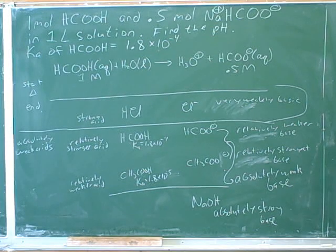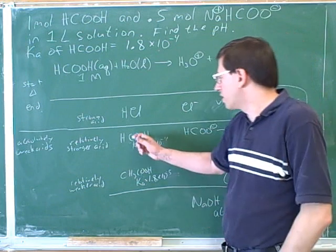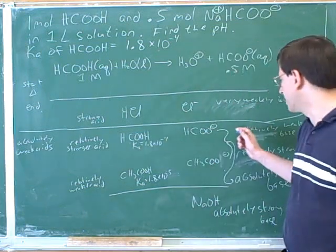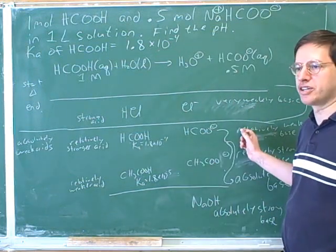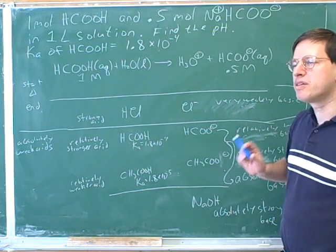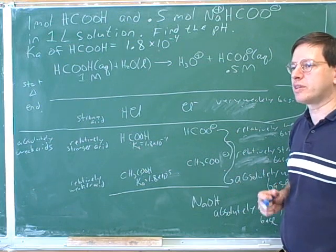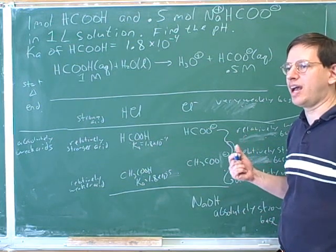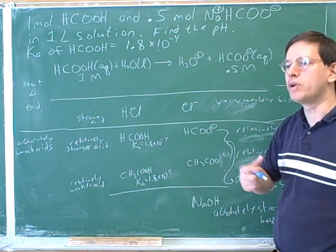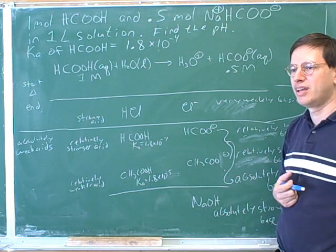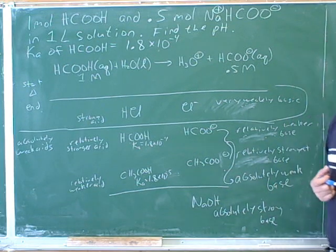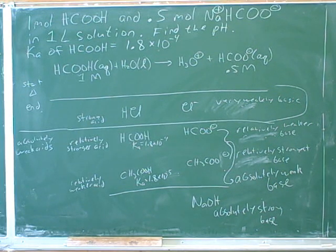There are some important ideas here. One important idea is that relatively stronger acids have relatively weaker conjugate bases. But the other important idea is that an absolutely weak acid has an absolutely weak conjugate base. Absolutely weak acids always have absolutely weak conjugate bases.